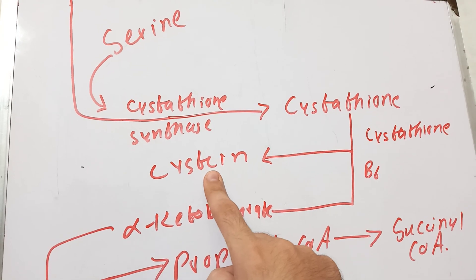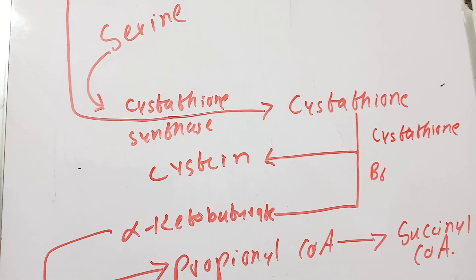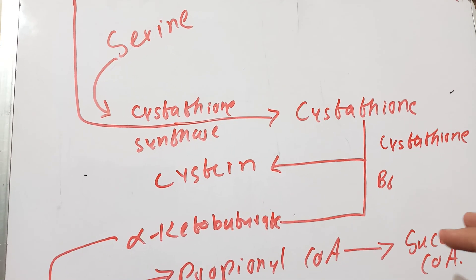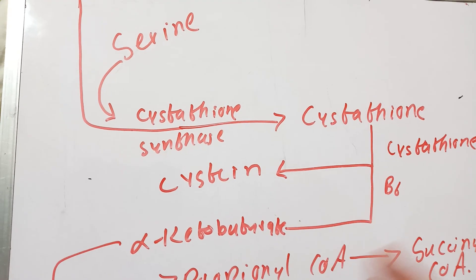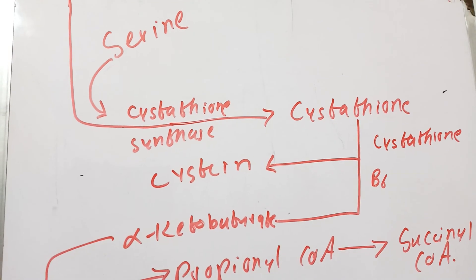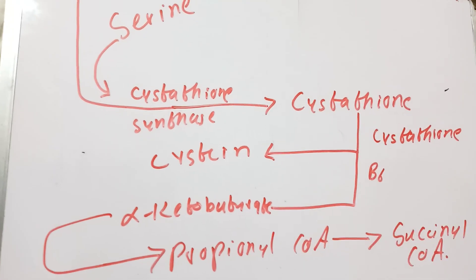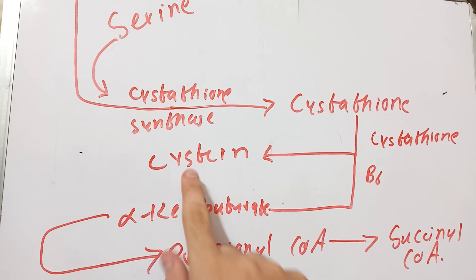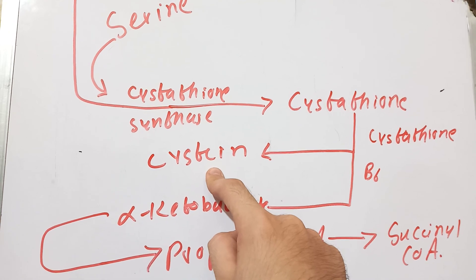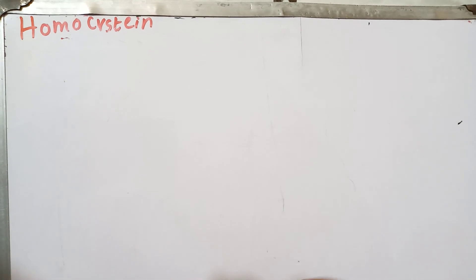Cysteine is a non-essential amino acid — it is actually called a conditionally essential amino acid. This is because cysteine can only be synthesized when methionine is present; when methionine is absent, homocysteine is not formed, and therefore cysteine cannot be synthesized.